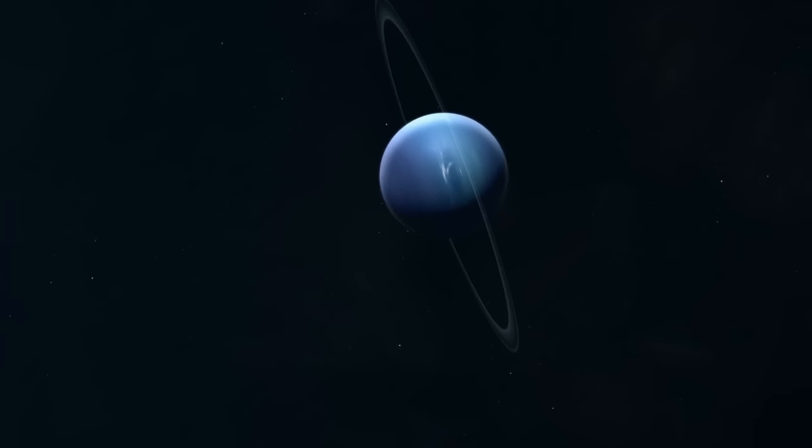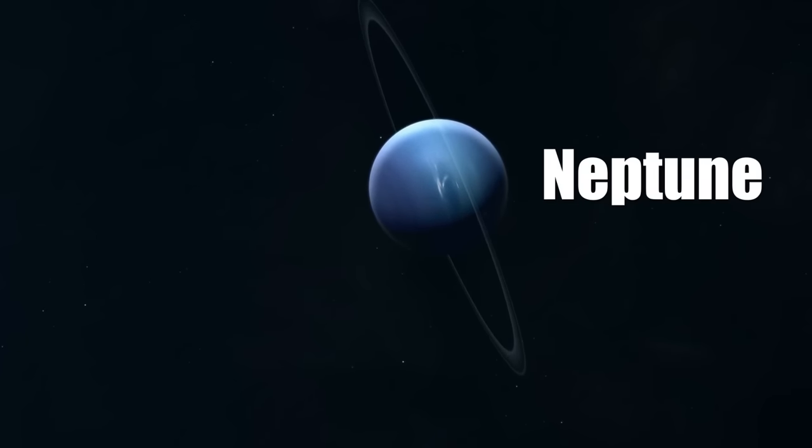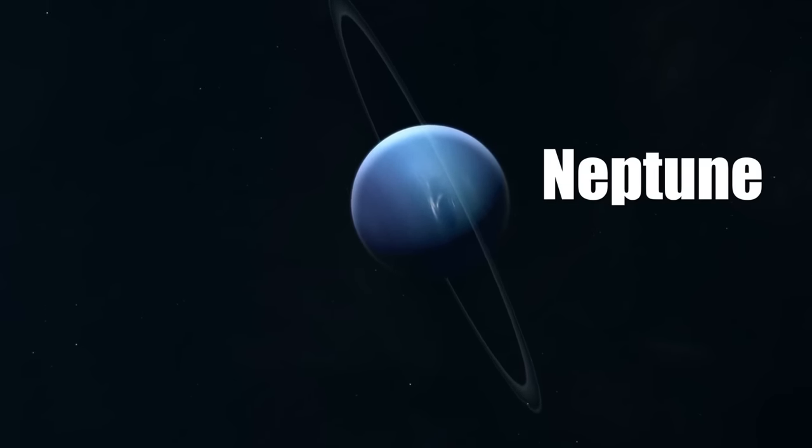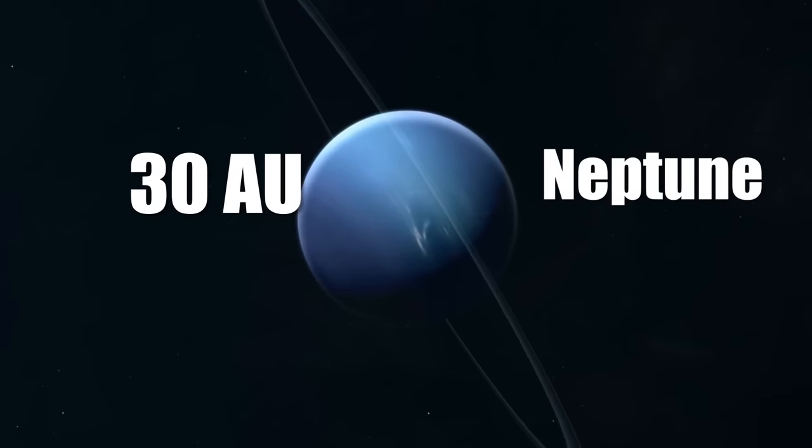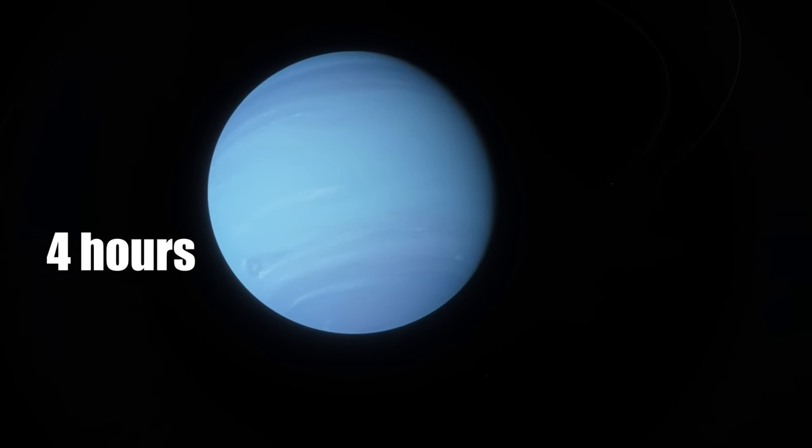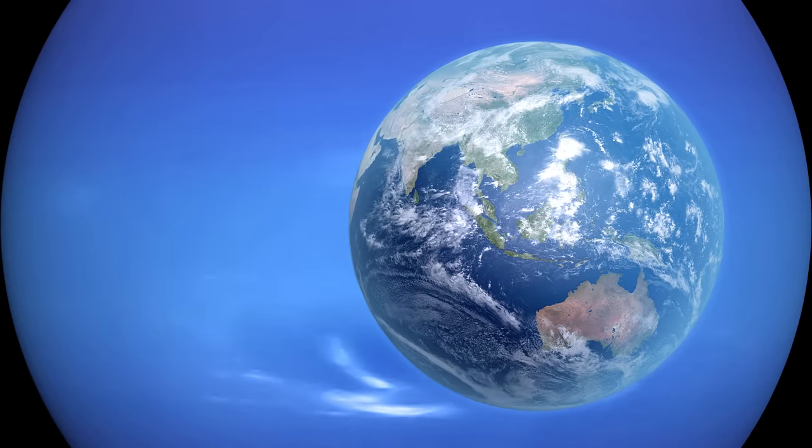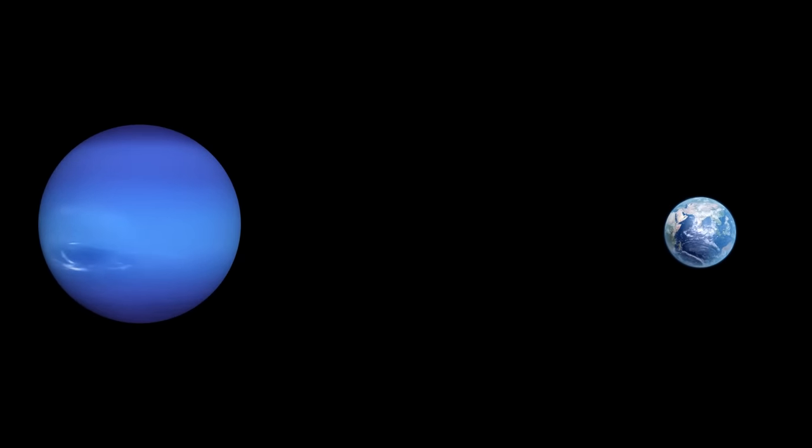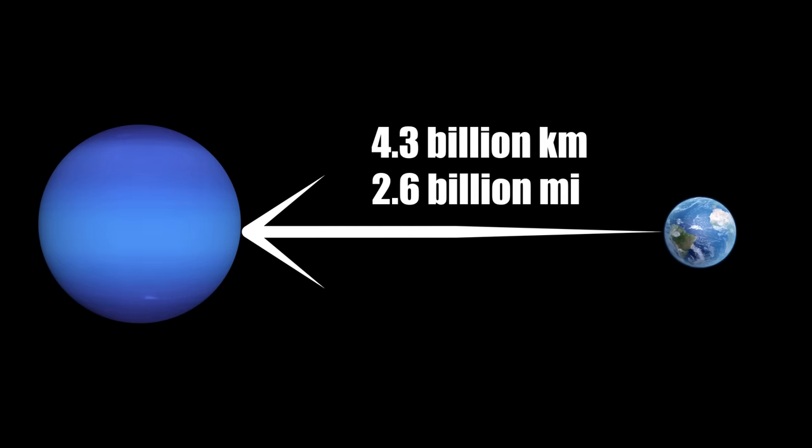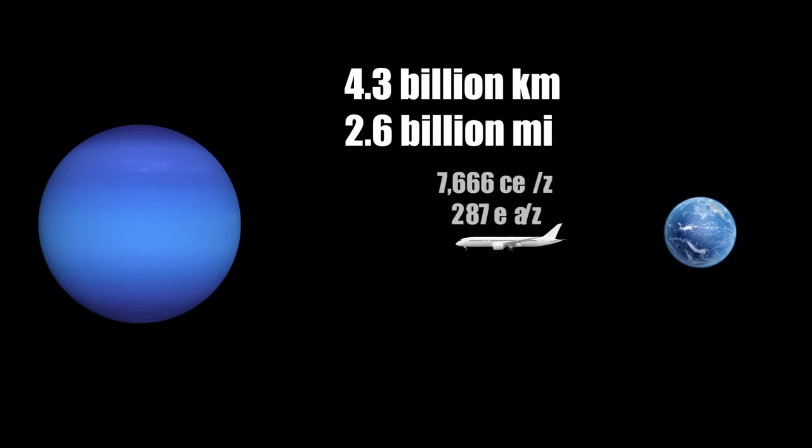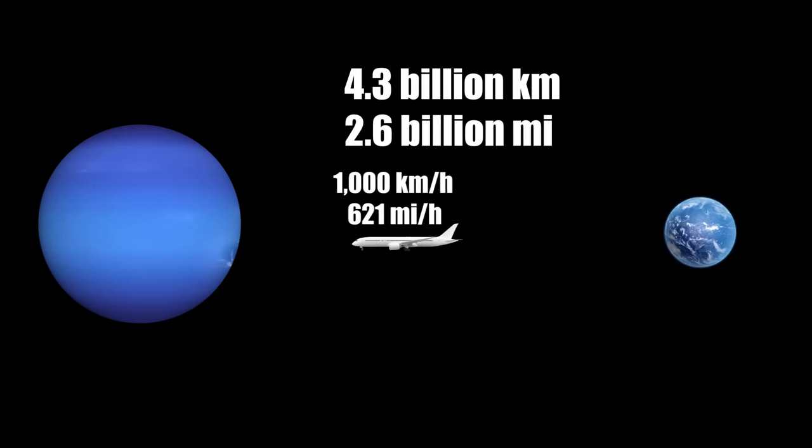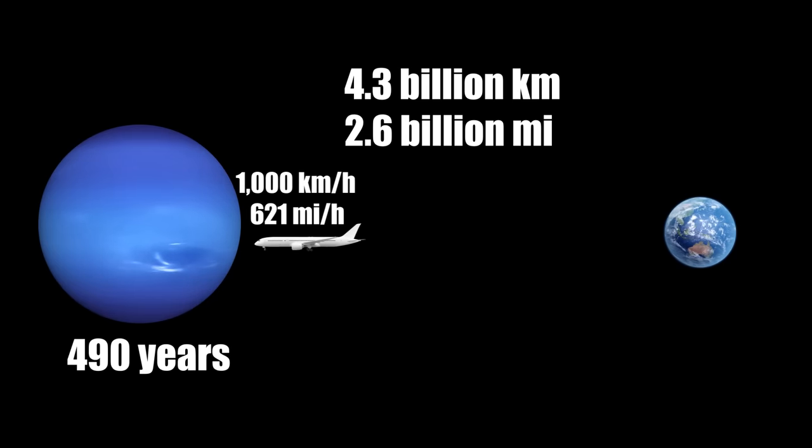Venturing further into our solar system, we reach Neptune, the most distant planet from the Sun, situated an average of 4.5 billion kilometres away, or 30 astronomical units. At this vast distance, sunlight takes four hours to journey from the Sun to Neptune. When Neptune and Earth align on the same side of the Sun, at their closest, the distance narrows to 4.3 billion kilometres. Imagining a flight to Neptune at the speed of an airplane, cruising at 1,000 kilometres per hour, it would take a staggering 490 years to complete this interplanetary journey, showcasing the immense scale of our solar system.